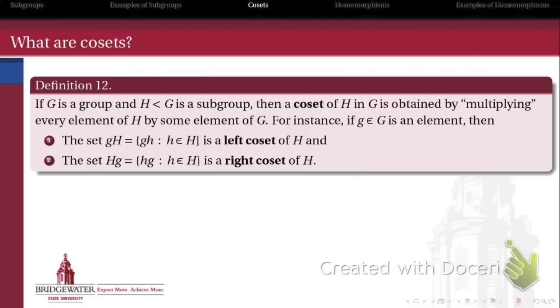The coset is what we get when we take a subgroup of a group. So we have a group G and a subgroup H. And a coset is obtained just by taking every element of that subgroup and multiplying it by some element of G.